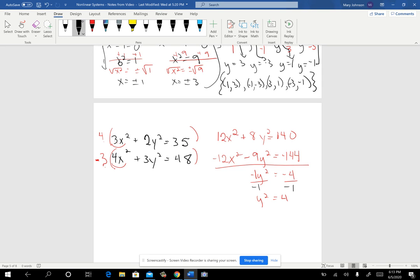And that gives me y squared has to be positive 4. All right, so that's good. Now I can just square root. Don't forget to get both square roots. So y is going to be plus or minus 2.